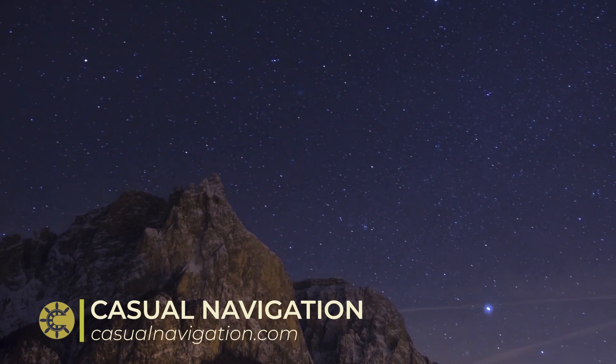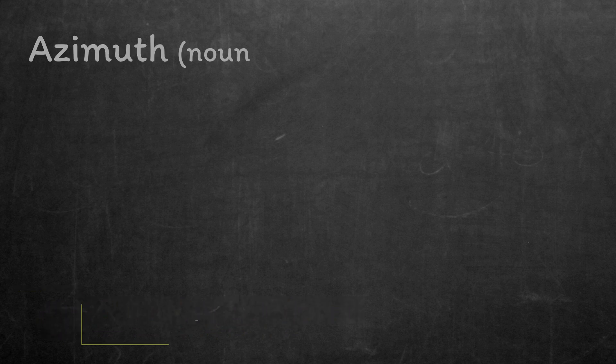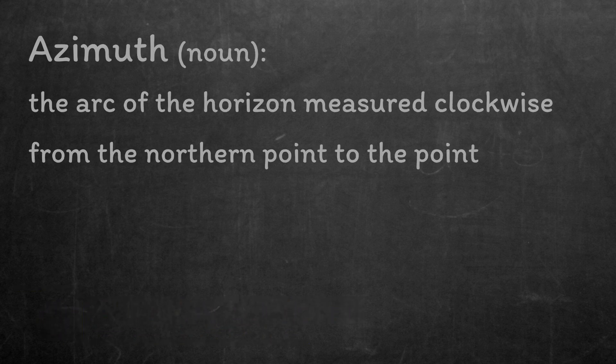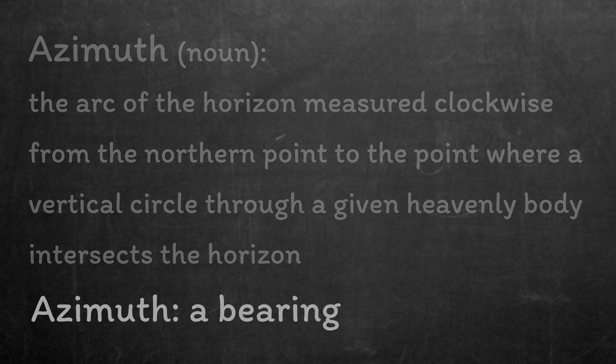So firstly, what is an azimuth? If we look in the dictionary, in navigation an azimuth is the arc of the horizon measured clockwise from the northern point to the point where a circle through a given heavenly body intersects the horizon. In normal words, it's just a bearing.